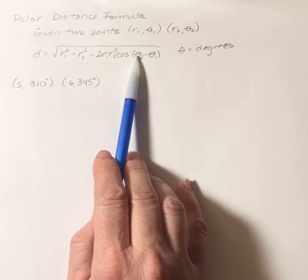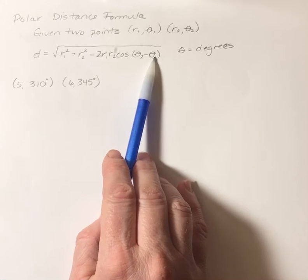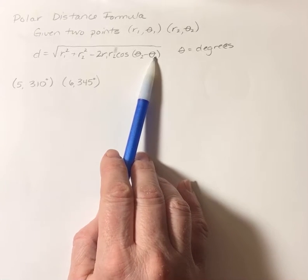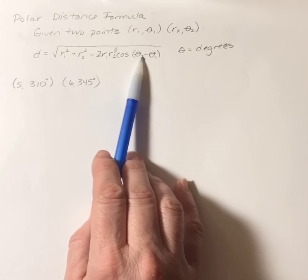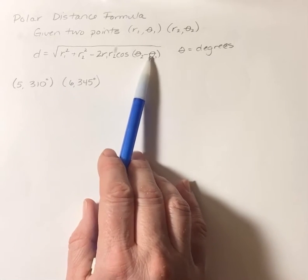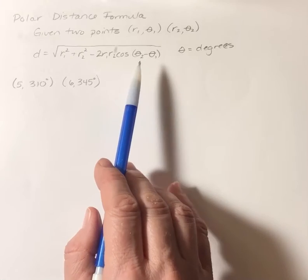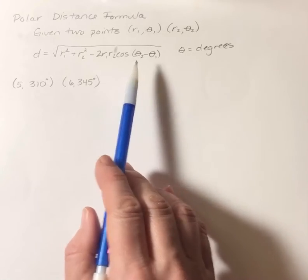If you take the larger one minus the smaller one, you'll always get a positive value here. And then things will usually work out better. In all honesty, it doesn't matter. It doesn't matter what you do.